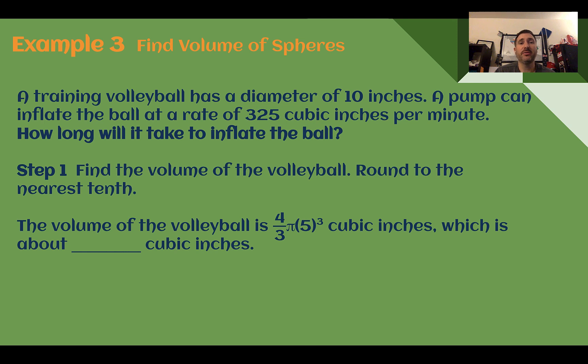Example 3, find volume of spheres. A training volleyball has a diameter of 10 inches. A pump can inflate the ball at a rate of 325 cubic inches per minute. How long will it take to inflate the ball? So let's find the volume of the volleyball. We'll round to the nearest tenth. And then to figure out the rate, we can divide by how much air is being put into it each minute.